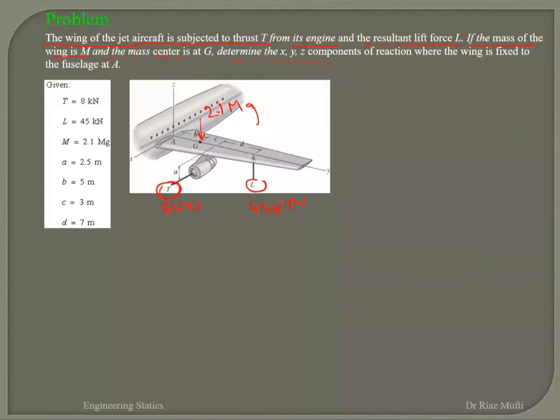Determine the x, y, z components of the reaction where the wing is fixed to the fuselage at A. So at point A, this wing is connected. You need to find the x, y, and z components of the reaction force.